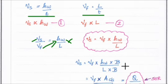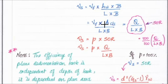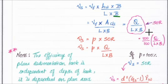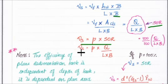Expanding further: Vs = VF × HW / L × B (multiplying and dividing by B), where HW × B is the area of cross-section. Since VF × A = Q, this gives Q / (L × B). We know Q / (L × B) is the SOR, so Vs = SOR. This confirms the relationship between settling velocity and the surface overflow rate.